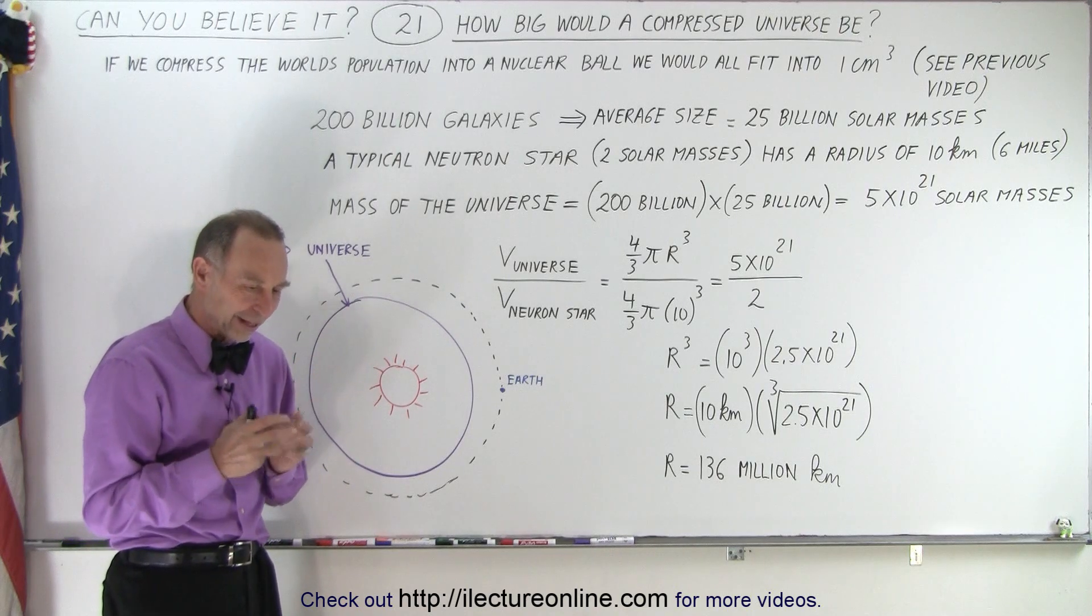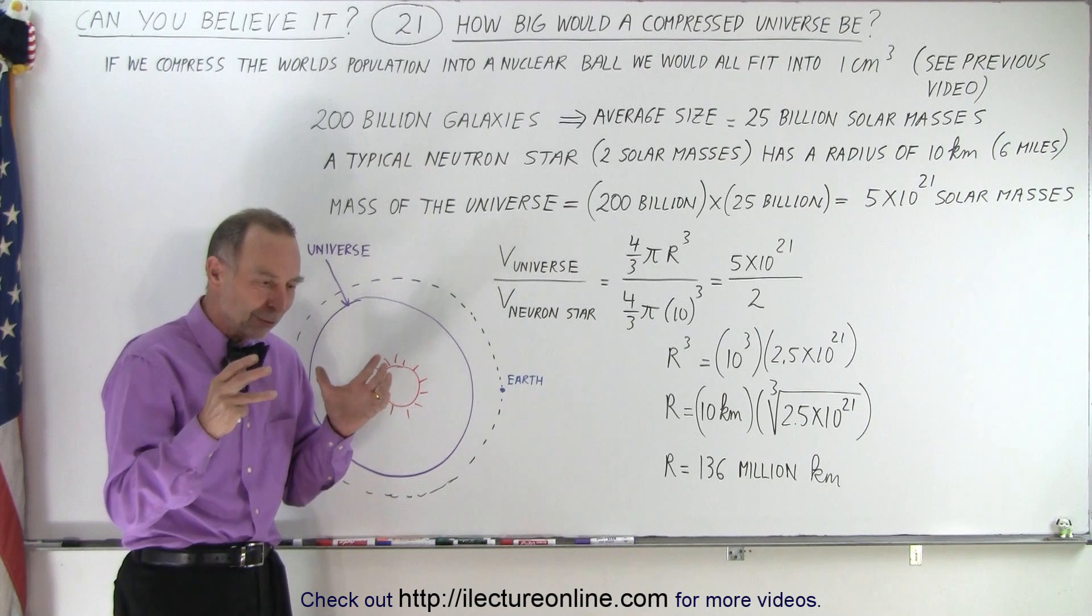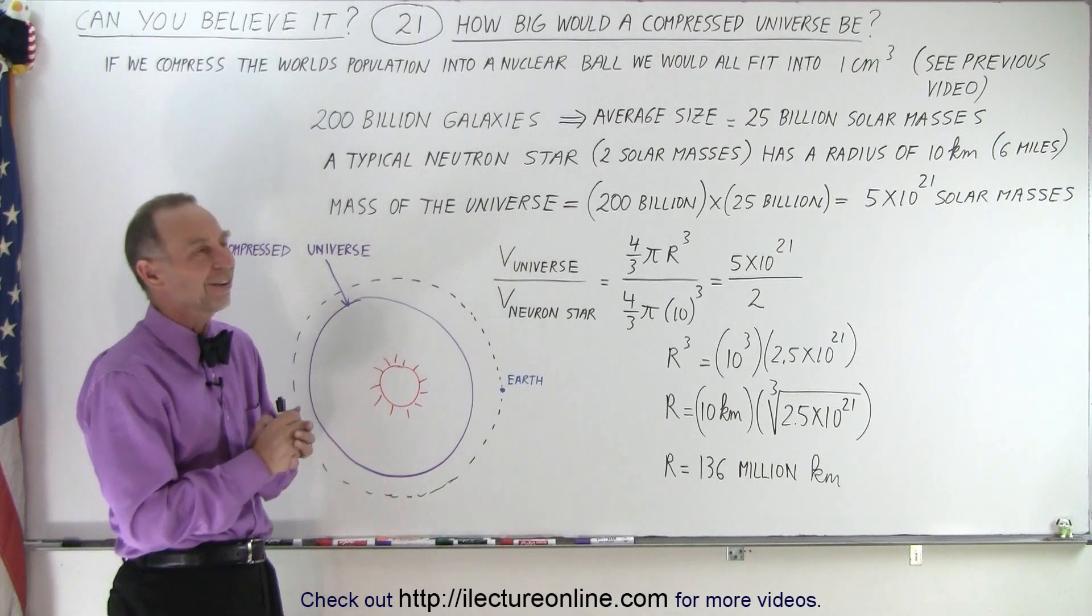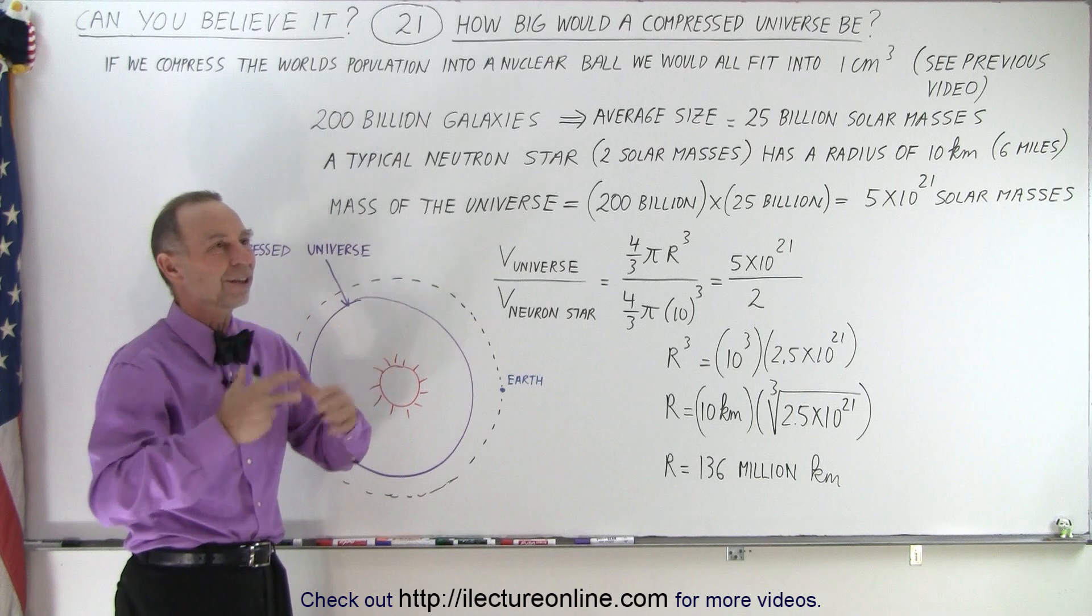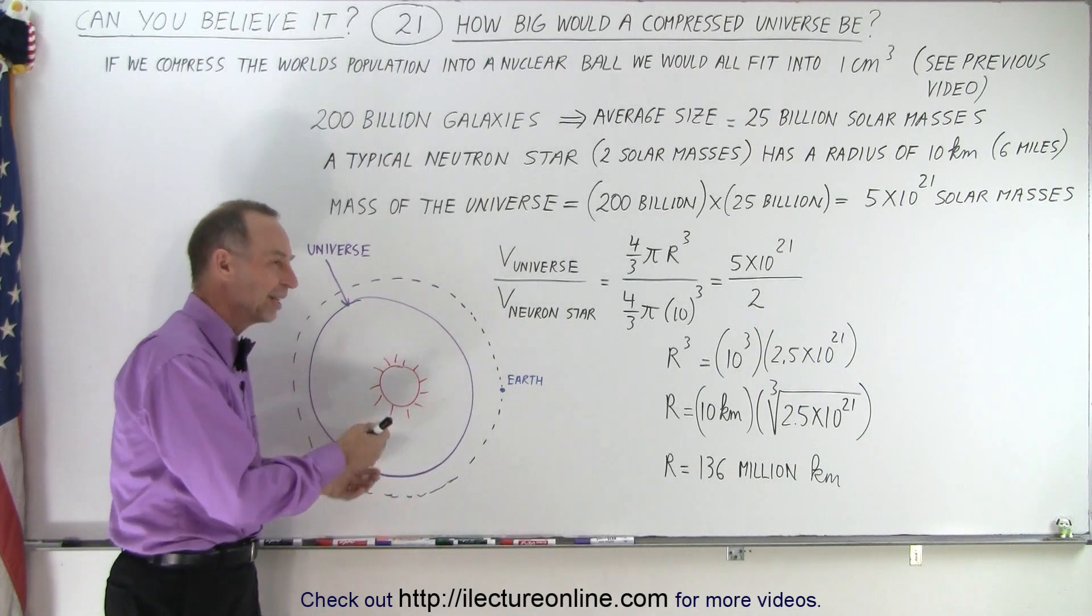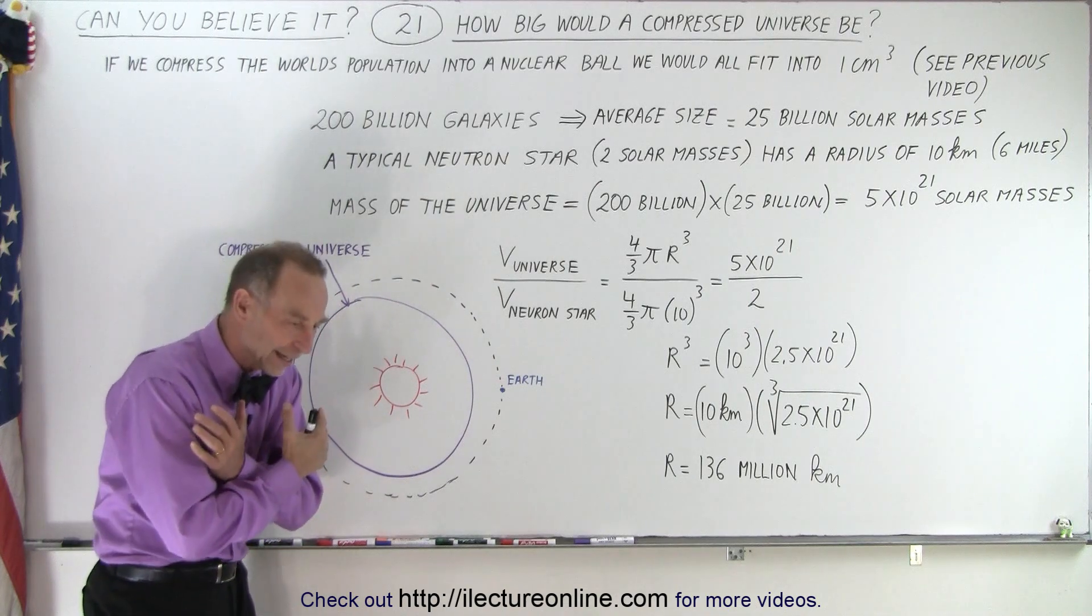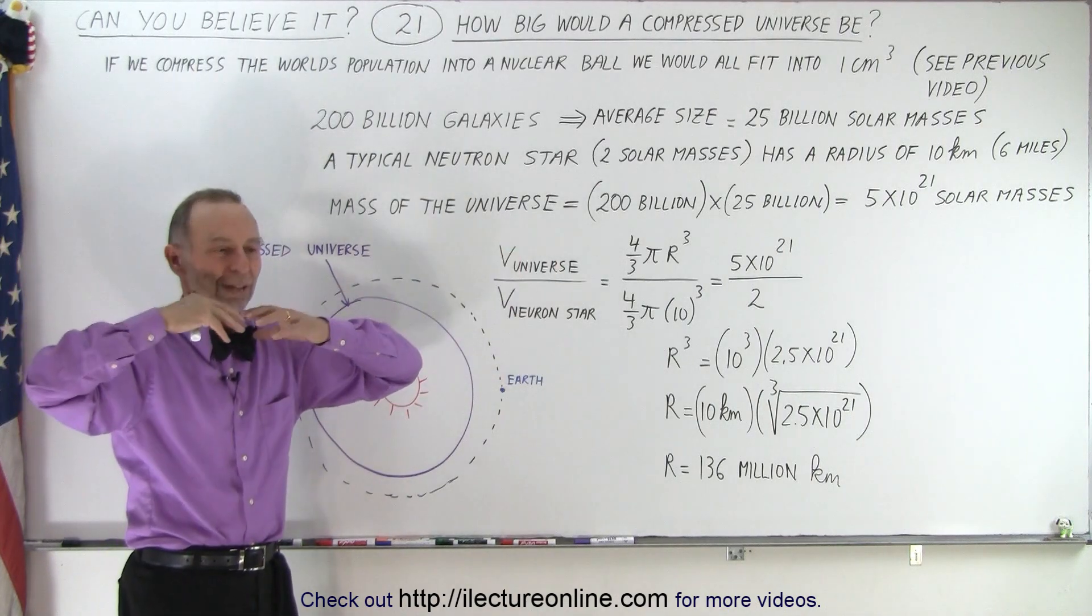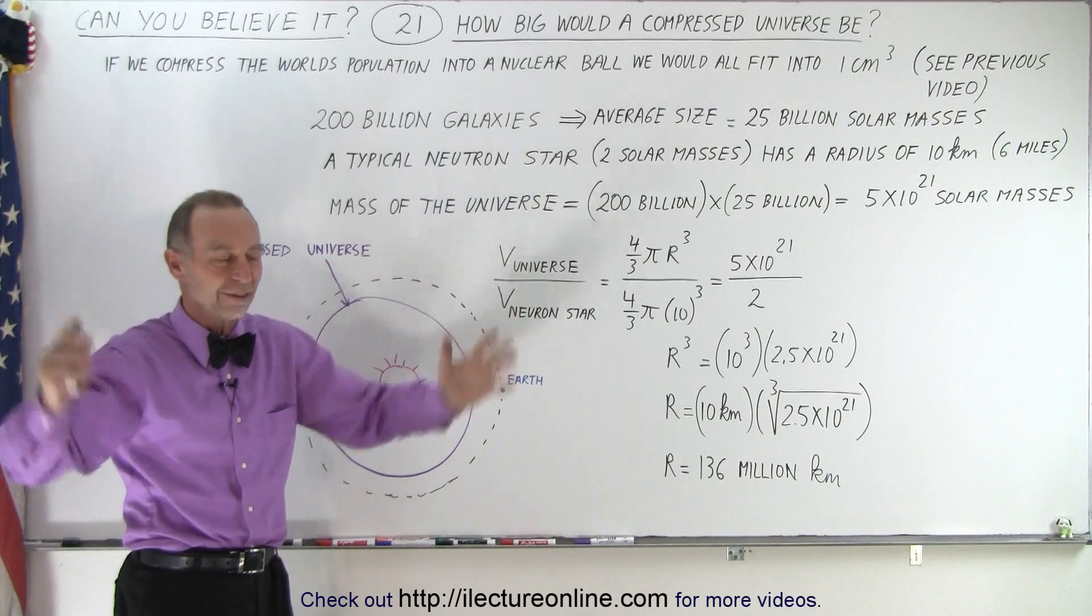We have trouble trying to explain the first 1 times 10^-35 seconds of existence, so we imagined there might have been something called the inflationary period that, magically within a very tiny fraction of a second, expanded the volume of the universe at an enormous rate—way faster than the speed of light.